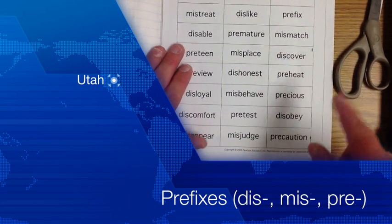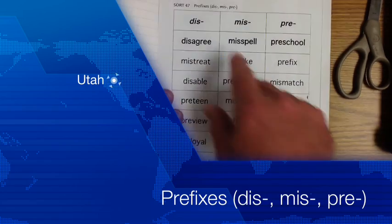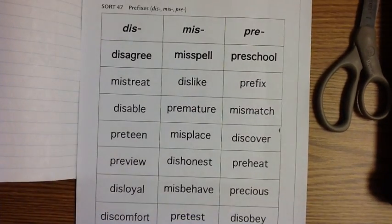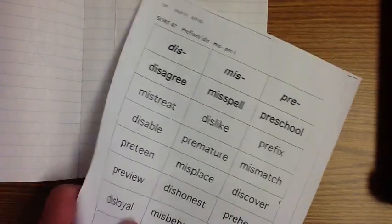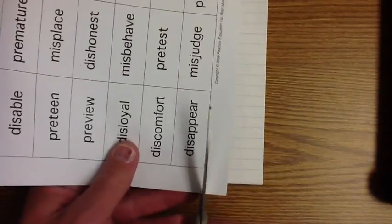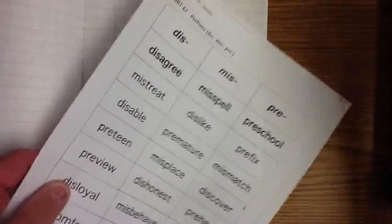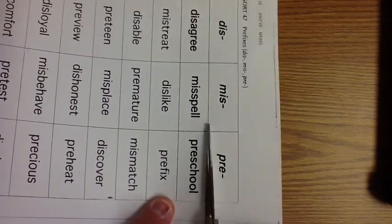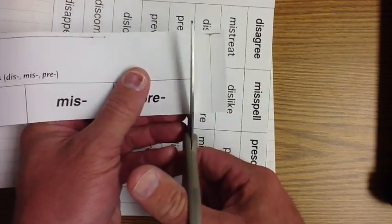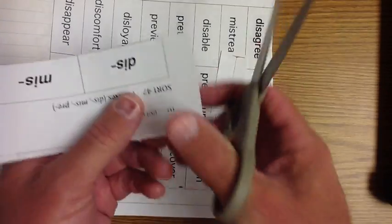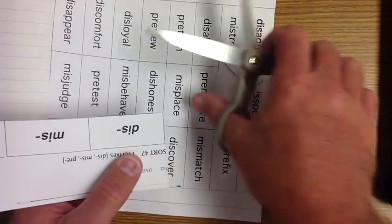We are doing your prefixes today. The first thing we got to do is cut these words out, but I'm going to do it a little bit different from what I've done before. I'm actually going to cut out these prefixes first, these ones right here. I'm going to leave them all put together.